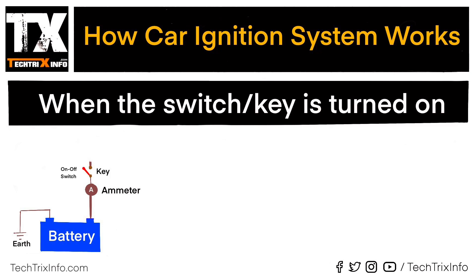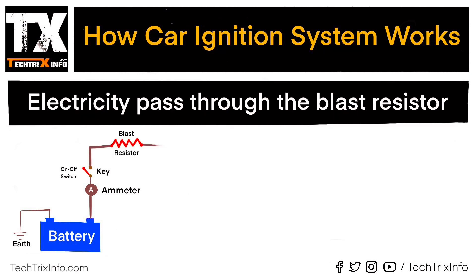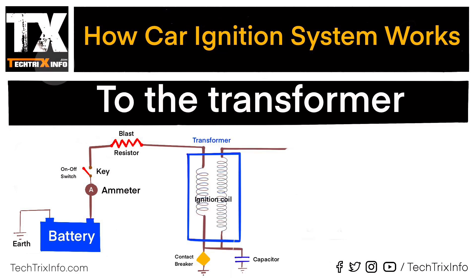Currently the switch is turned off — let's turn it on. Now that we have turned it on, electricity passes through the blast resistor to the transformer. The transformer has primary and secondary coils.